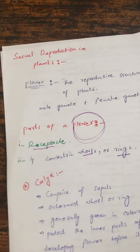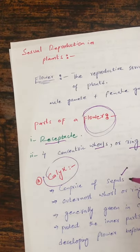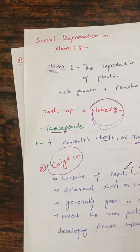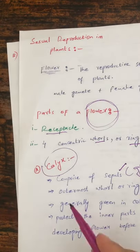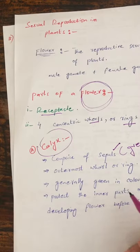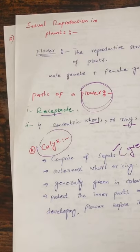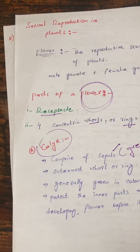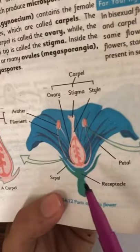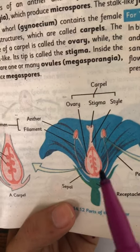The first ring is known as the calyx. The calyx is generally green in color and is made up of sepals. It protects the inner parts of the developing flower before it opens. So the calyx, which is the outermost whorl made up of green sepals, is related to the protection of the inner parts of the flower.